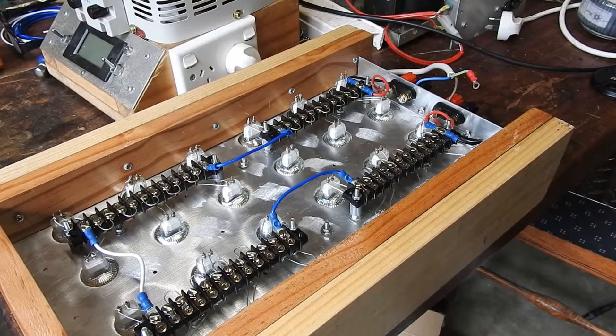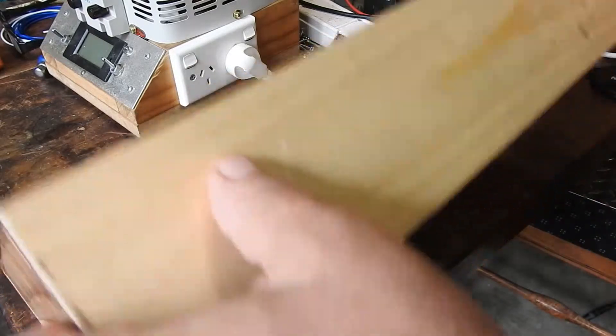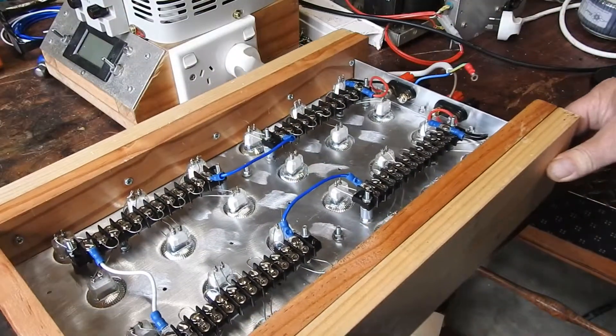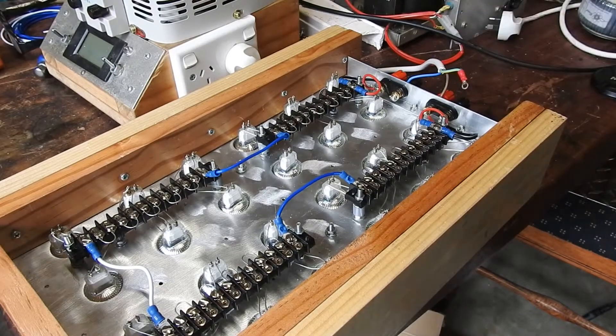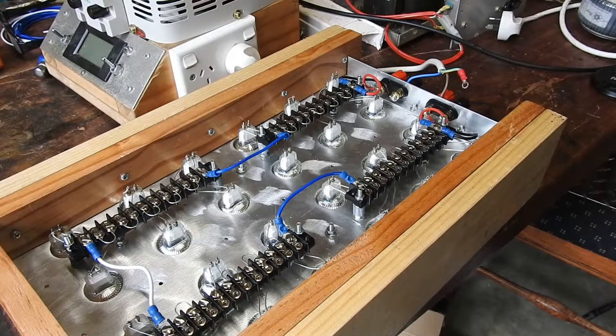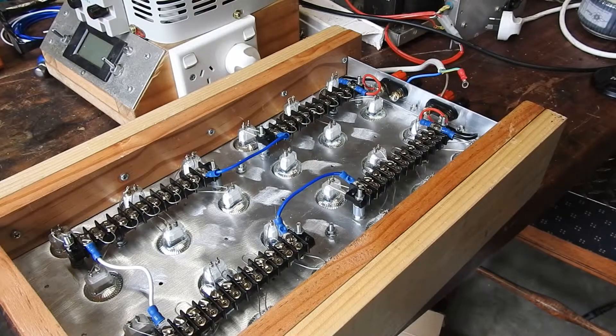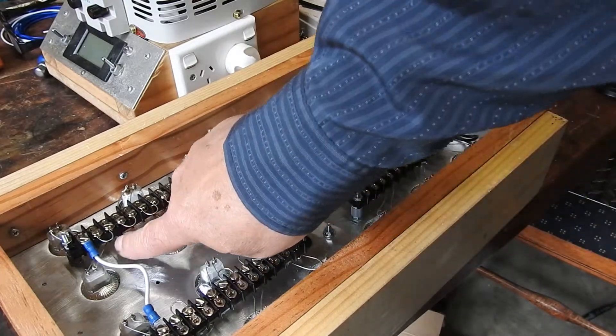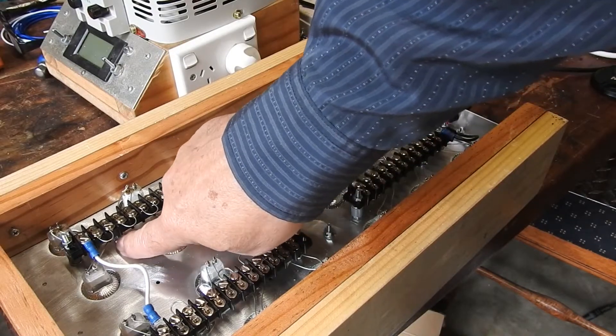The second issue I encountered was while looking at turning it over to look at the brightness of the bulbs, this earth lead touched the chassis and tripped the safety switch, the residual current detector inside the variac, which is obviously a worry. It turned out that down here one of these wires was touching that bolt.